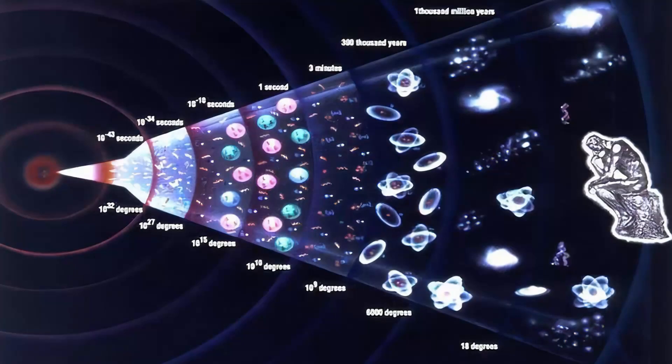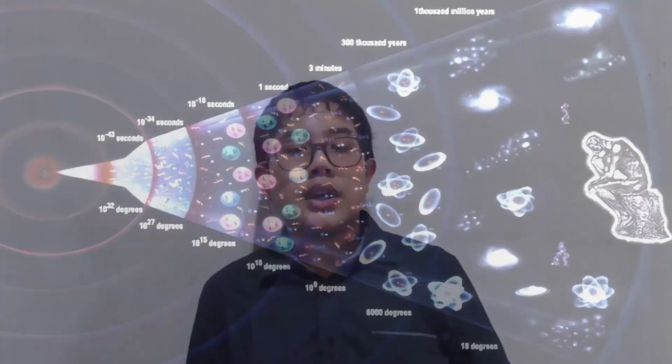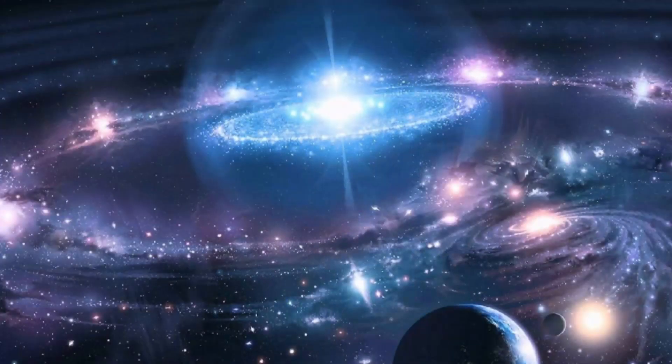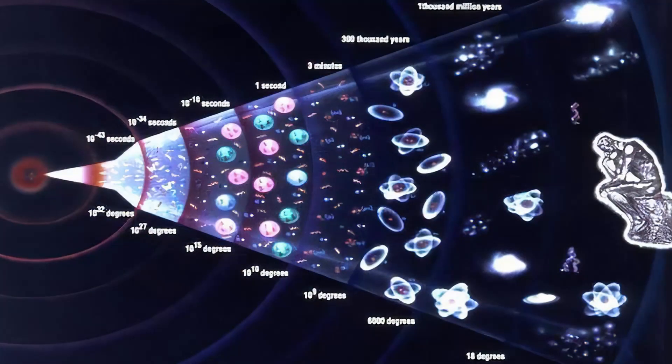So by a series of processes, those atoms and particles will turn into galaxies, planets, life, and much more. That is basically the timeline of the Big Bang, from the creation of quark particles to the formation of star systems. However, there are several details left untouched, like what happened before the Big Bang, how the Big Bang was formed, and much more.